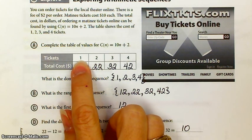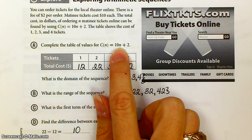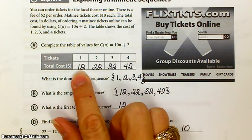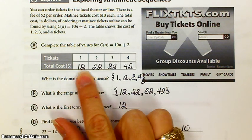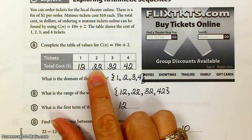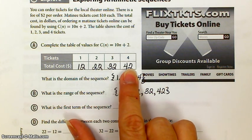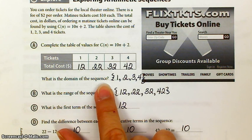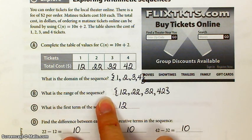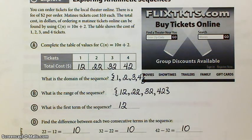Okay, for 1 ticket, if I use this rule and I put 1 in here, then I generate a cost of 12. If I buy 2 tickets, that's 2 times 10 plus 2, that's 22. 3 times 10 plus 2, 4 times 10 plus 2, etc. So the domain of this sequence is 1, 2, 3, 4. Range of the sequence is 12, 22, 32, and 42. This would be a discrete graph if you graphed it because we're not going to buy parts of a ticket.